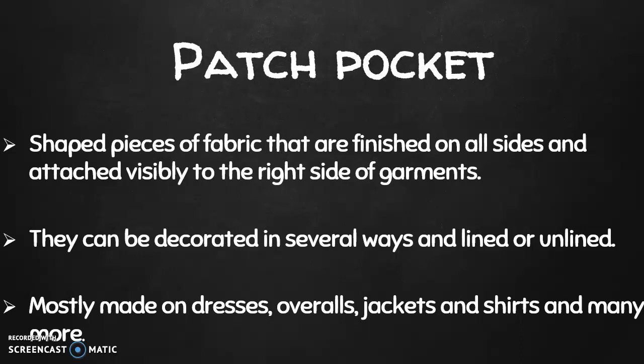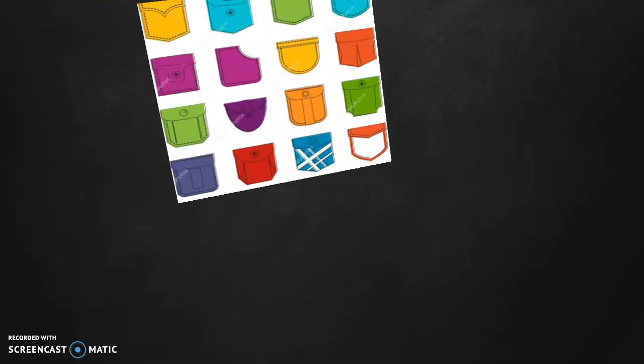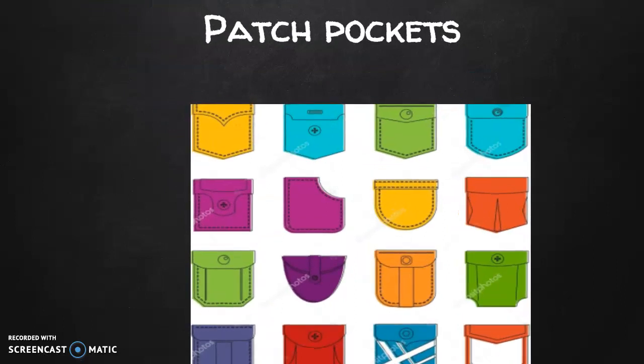Patch pockets are mostly made on dresses, overalls, jackets, shirts, and many more. Here are different pictures and shapes of patch pockets. They can be shaped in several ways — some have flaps, others don't. There is a flap over here that covers the button. When you look at the side, even though it has a flap, the shape is different from the first one.